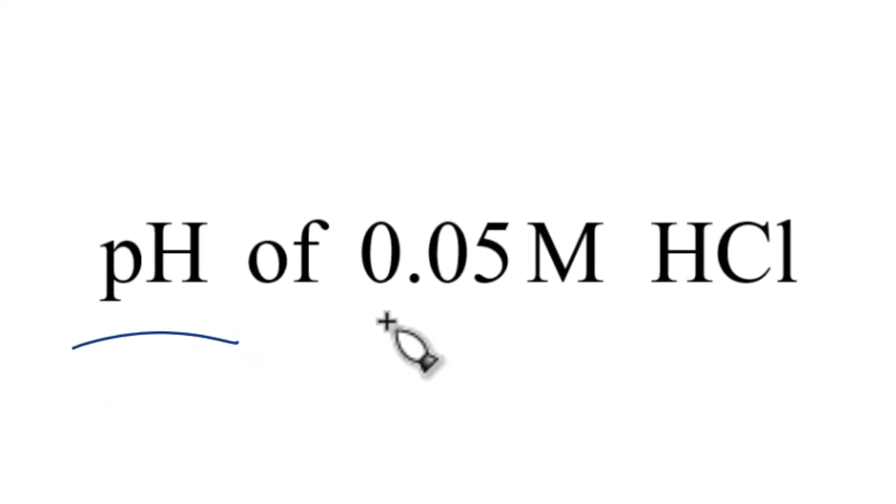Let's find the pH of a 0.05 molar solution of HCl. That's hydrochloric acid. So, first off, we need to recognize that HCl is a strong acid. Just need to memorize that.